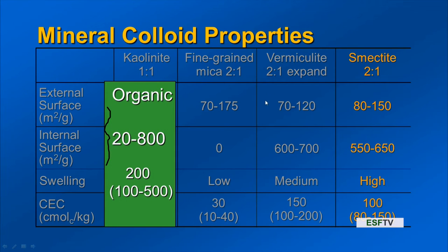For organic colloids, the charge source is very different — carboxyl, phenol hydroxy, and alcohol hydroxy. The CEC of organic colloids averages around 200 centimoles of charge per kilogram — higher than anything in the minerals — and has a very high range. Organic colloids have a much higher CEC. This is dependent on pH, so the story will become more complex. But for now, 200 centimoles of charge per kilogram of soil is the highest CEC we have.